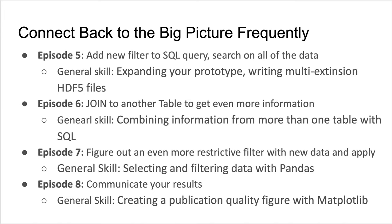In episode six, the Gaia data is joined with the PanSTARRS data to gather photometry for all stars selected thus far. This episode teaches learners to combine information from more than one table with SQL. In episode seven, the PanSTARRS data is used to create an even more restrictive filter, which is applied to the downloaded data. Learners are taught to select and filter data with Pandas.